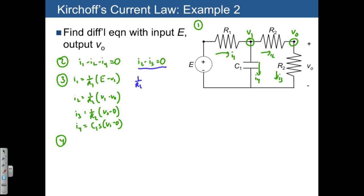1 over R2 times V1 minus VO equals 1 over R2 times VO. Notice that the R2s cancel out.